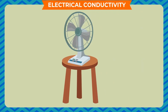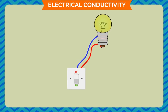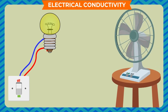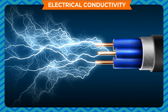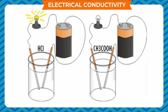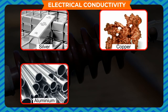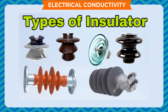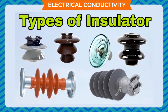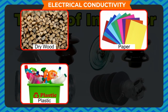Electrical conductivity: when we switch on a fan it starts rotating, and an electric bulb emits light when its switch is on. Electric wires connect the fan or bulb to the switch. The ability of a material to allow the flow of electrons or electric current is called electrical conductivity — such materials are called conductors. Examples of electrical conductors are silver, copper, aluminium, and iron. Materials which do not allow electric current to pass through them are called insulators — examples are dry wood, paper, plastic, and rubber.